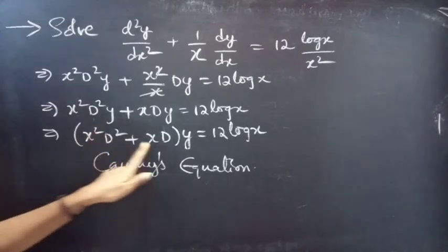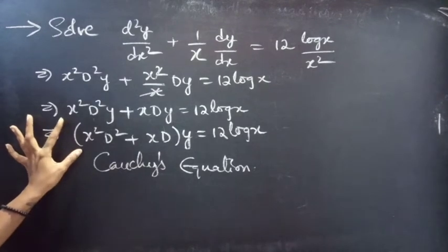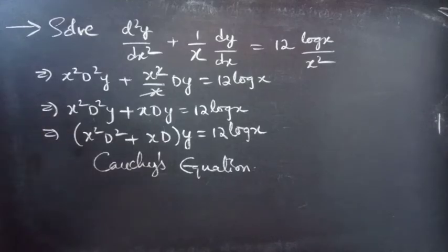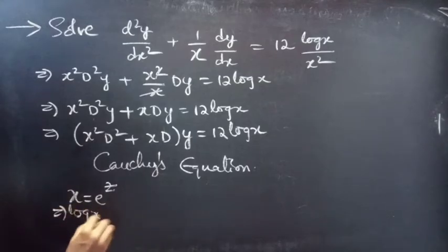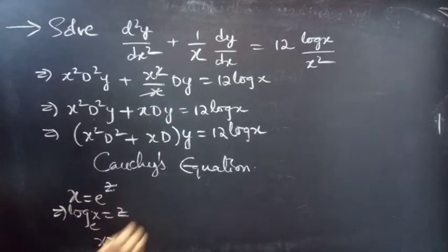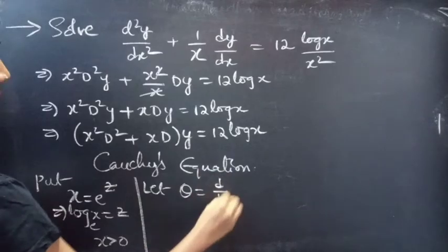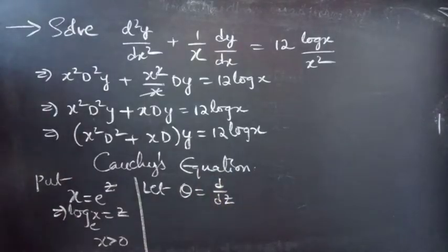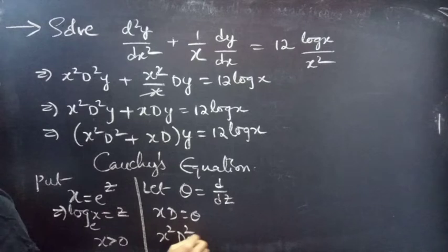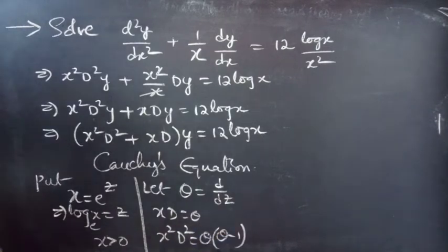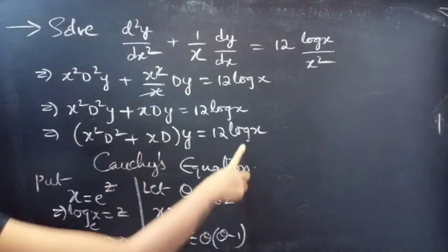We are having variable coefficients. Now we are going to reduce this equation to a higher order linear differential equation with constant coefficients by making the substitution x = e^z. Then log(x) = z for x > 0. Let θ = d/dz, where θ is a differential operator with independent variable z. So x·d = θ, x²·d² = θ(θ − 1). Replace x²·d² by θ(θ−1), x·d by θ, and log(x) by z.